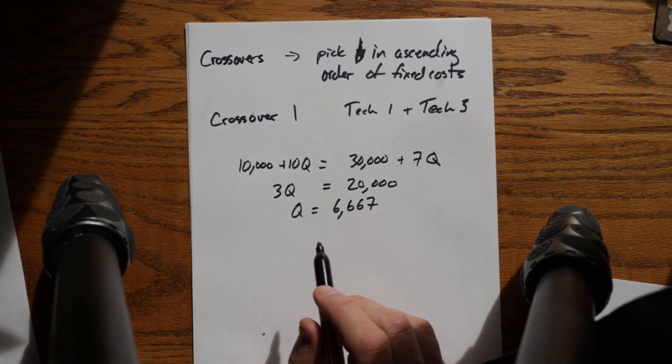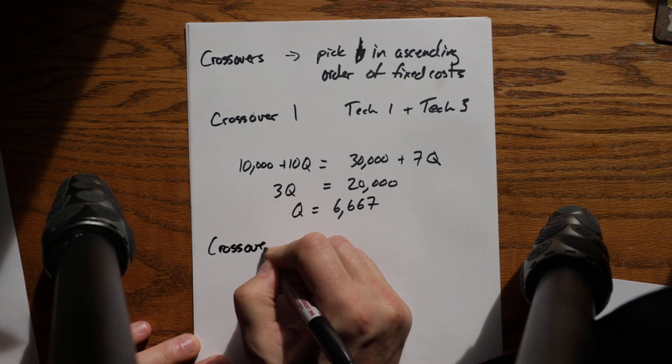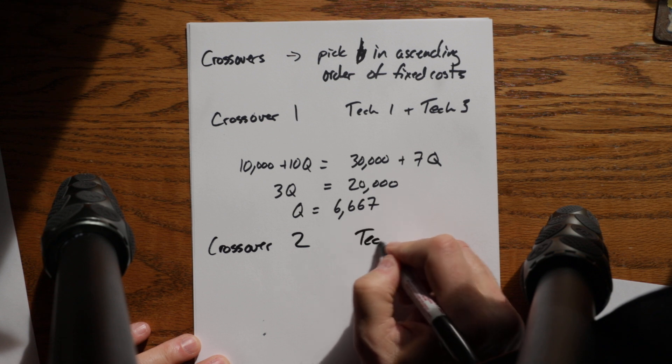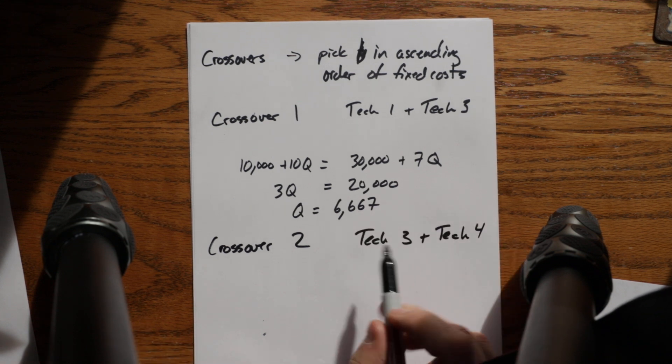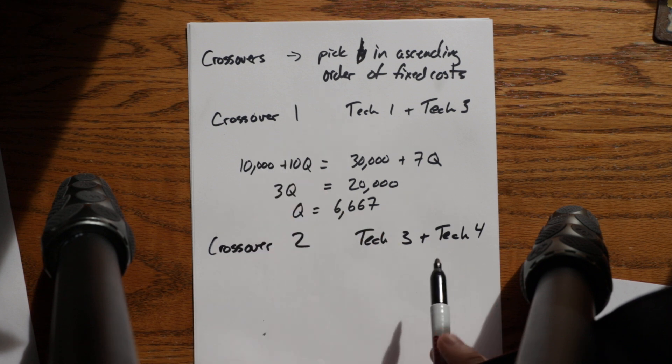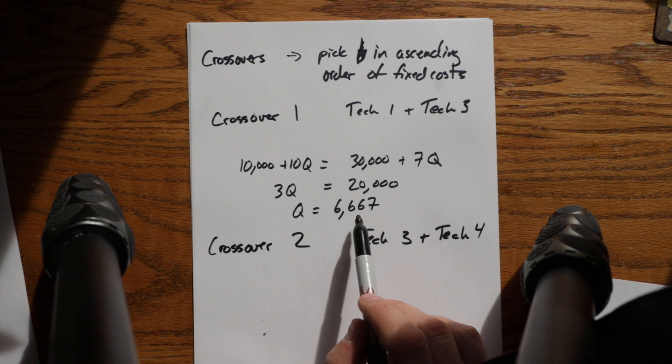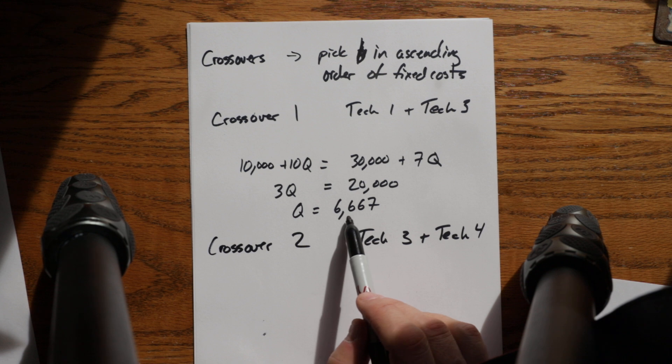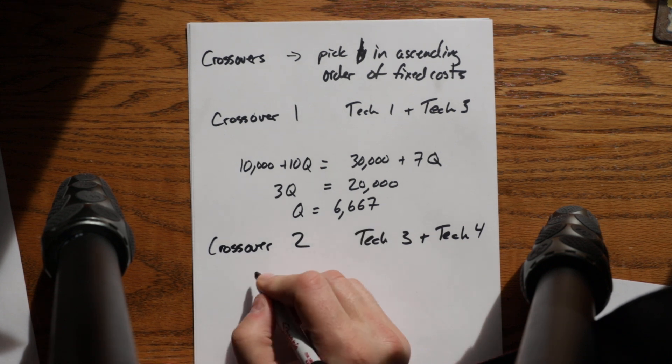So then I go to crossover two, and that will be between tech three and four. I'm not going to look at one versus four because I know that four is still more expensive than one all the way past 6,667. So I'm just looking at another one.